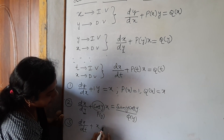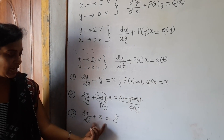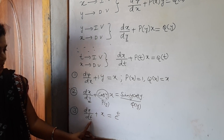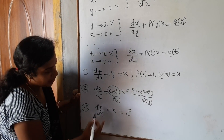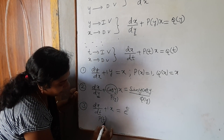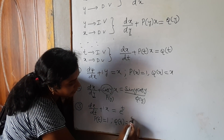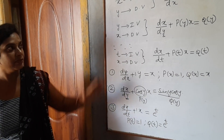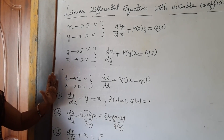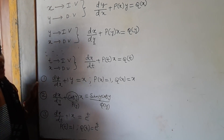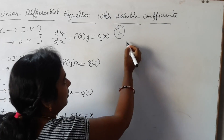For the third example, dx/dt plus x equals e^t. This is also one type of the linear equation with independent variable t and dependent variable x. In this equation, the x coefficient is 1, so P(t) equals 1 and Q(t) equals e^t. These are the linear differential equations with independent and dependent variables.